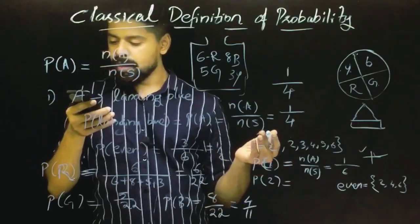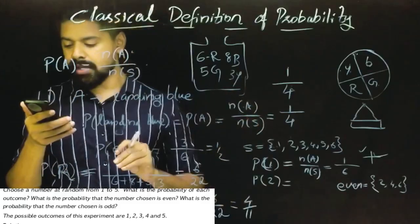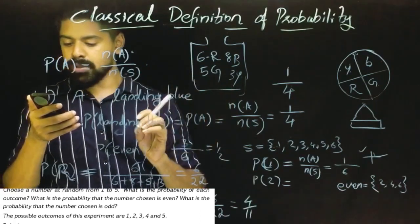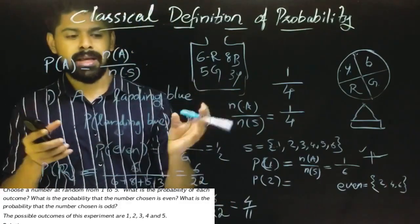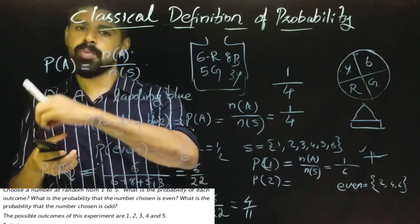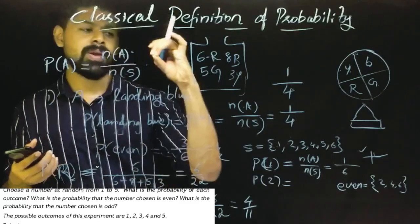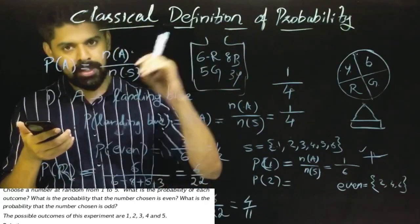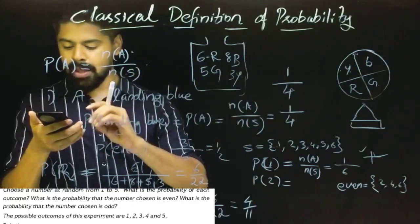The first question is to choose a number at random from 1 to 5. What is the probability of each outcome? What is the number chosen?